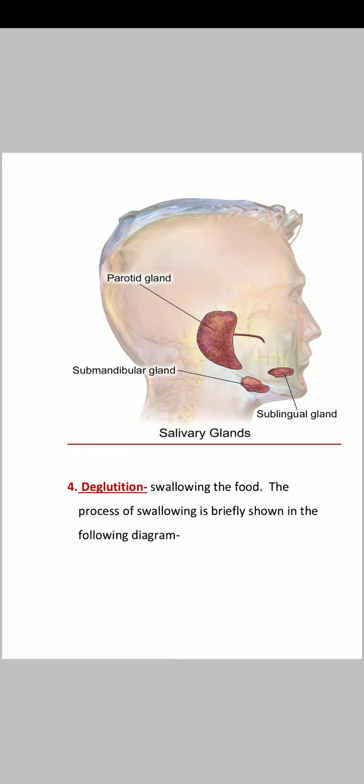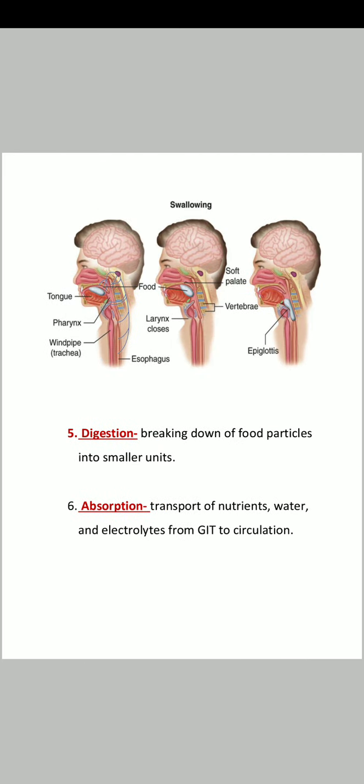Next is deglutation, which means swallowing the food. We took the food into the mouth with ingestion, then mastication, then salivation. Now deglutation begins — the food is placed on the tongue, and then passes through the pharynx. On the other side of our windpipe is the trachea.